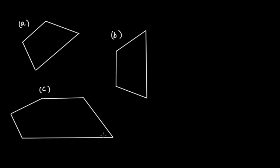In this figure, this pair of opposite sides is parallel, but it is not a quadrilateral because it has five sides — one, two, three, four, and five. So this is not a trapezium because it is not a quadrilateral in itself.